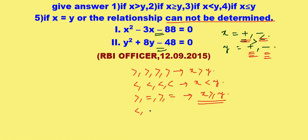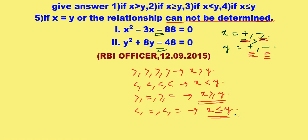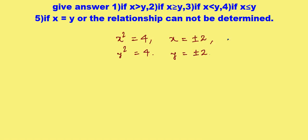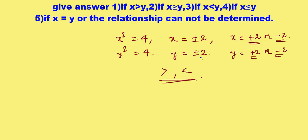If it's a mixture of less than and equal to signs, the answer will go to x is less than or equal to y. For example, if x squared equals 4 and y squared equals 4, then x equals plus or minus 2 — note it is read as 'plus or minus 2', not 'plus minus 2'. So x is plus 2 or minus 2, and y is plus 2 or minus 2. Plus 2 is greater than minus 2, and minus 2 is less than plus 2, so the answer goes to can't be determined, even though it might look like both values are equal and it should go to x equals y.